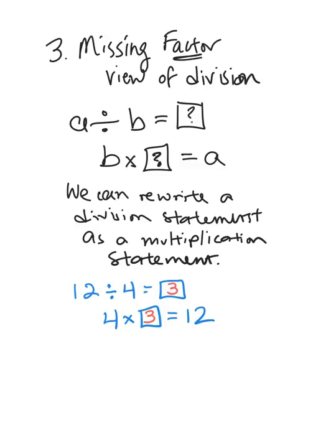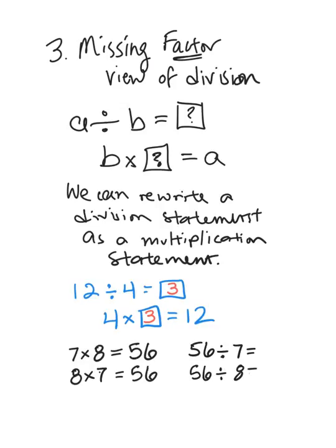So this showcases the connection between multiplication and division. You could have a thing called a fact family. Like 7 times 8 is 56. A fact family has 4 things in it: two multiplication statements and two division statements, so 56 divided by 7 and 56 divided by 8. The missing factor view says if I know 7 times 8 is 56, then 56 divided by 7 is 8 and 56 divided by 8 is 7.